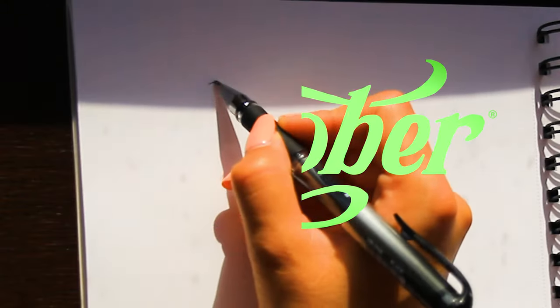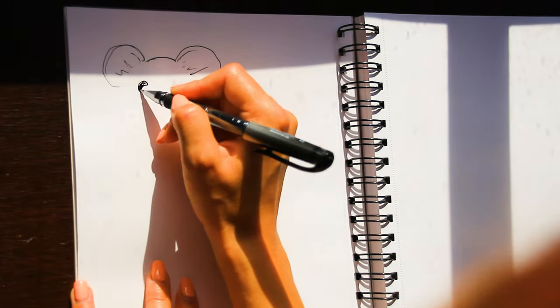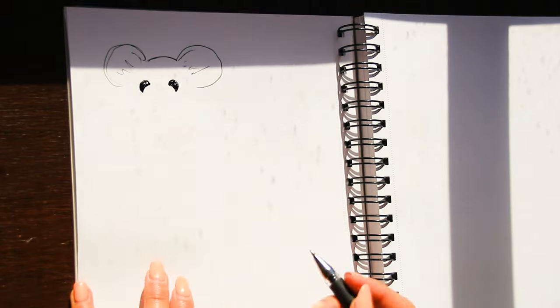Well hi there, it's Inktober day two and today's prompt was scurry and I'm not gonna lie, as soon as I saw this one my mind did go blank for a second or two and then suddenly I thought of a mouse.